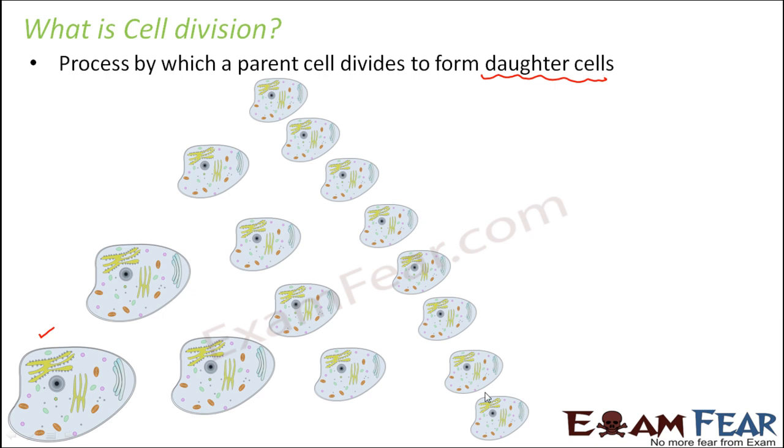And due to this increase in number of cells, we can see growth, we can see formation of specialized cells, we can see formation of cells which can replace the damaged or the dead cells. So this is cell division. A very simple definition. Process by which parent cell divides to form daughter cells.